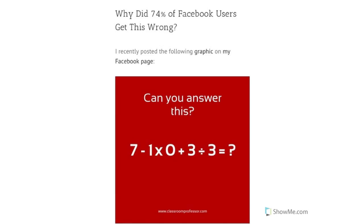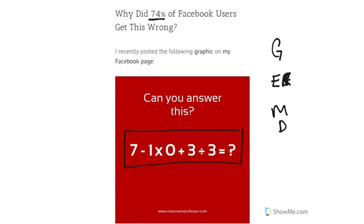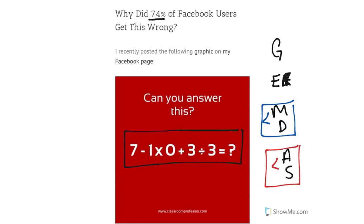Let's take a quick look at the question again: 7 minus 1 times 0 plus 3 divided by 3. Are you going to be part of the 74% that got it wrong, or the percentage that got it correct? Make sure you use what we reviewed — you must use germ desks: grouping symbols, exponents, roots and radicals (don't worry too much about this until 7th or 8th grade), multiplication or division whichever you see first, and addition or subtraction whichever you see first. Go ahead and give this a try, then I'll give you the correct answer in the next slide. Go ahead and pause.